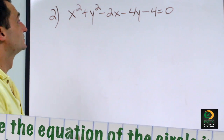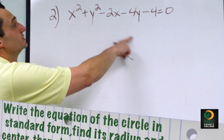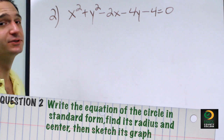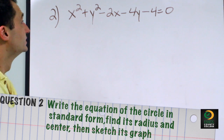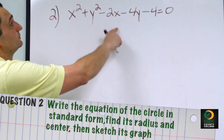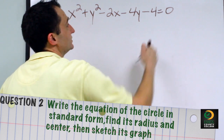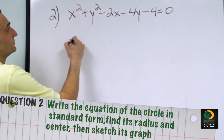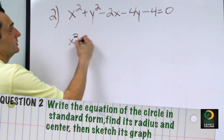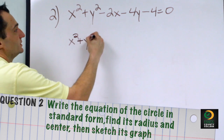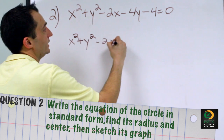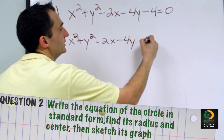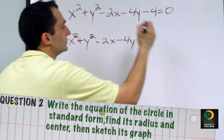Problem number 2 asks us to write this equation in standard form and then sketch the graph. So our first step would be to move the negative 4 over to the other side. So we're left with x squared plus y squared minus 2x minus 4y equals 4.